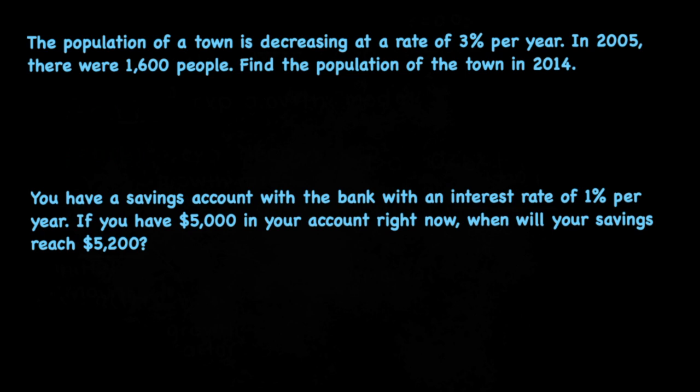Our first problem here states the population of a town is decreasing at a rate of 3 percent per year. In 2005 there were 1,600 people. Find the population of the town in 2014.